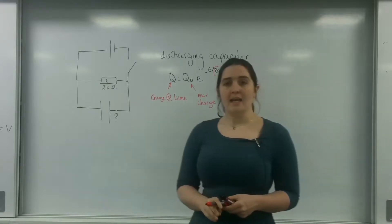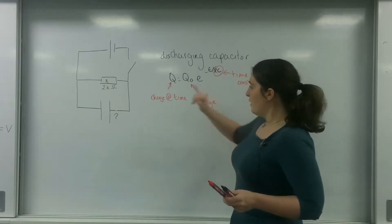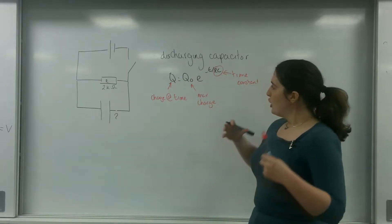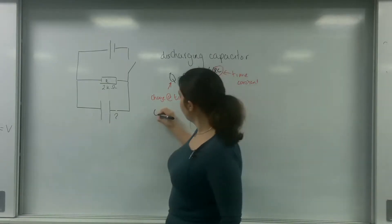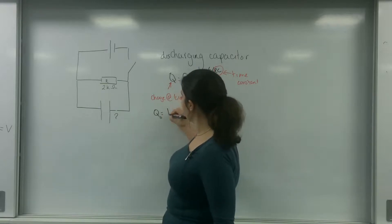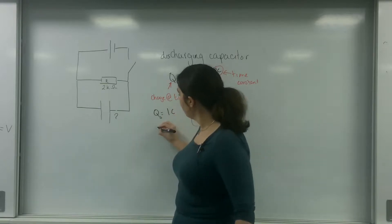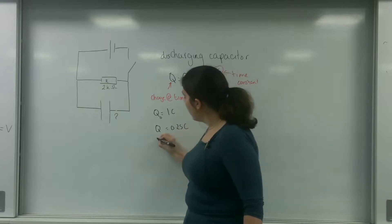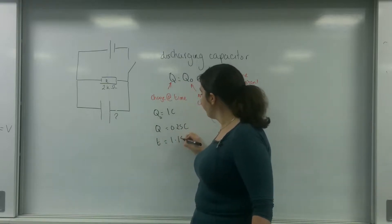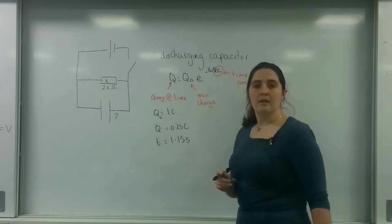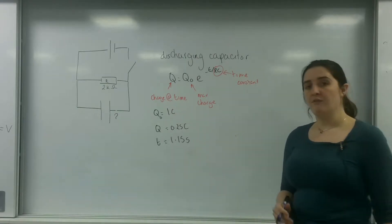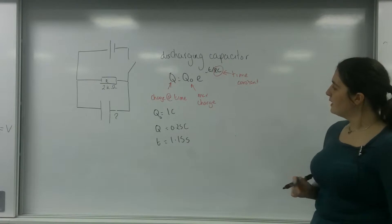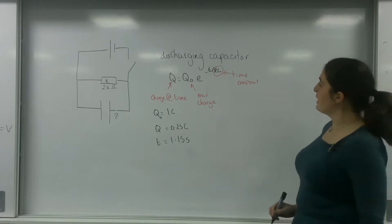What I want to do today is find the value for C. I know the charge at the beginning is 1 coulomb, my charge at time T is 0.25 coulombs, and my time is 1.15 seconds. I want to find my value for C using this formula.